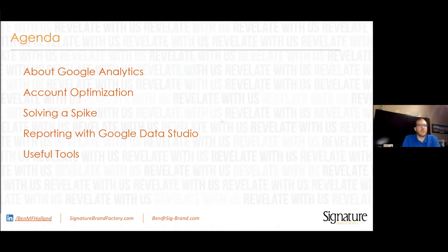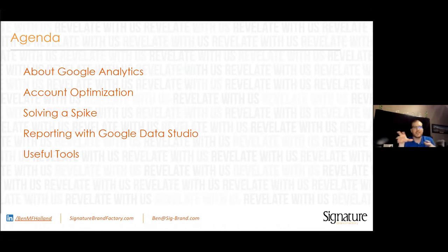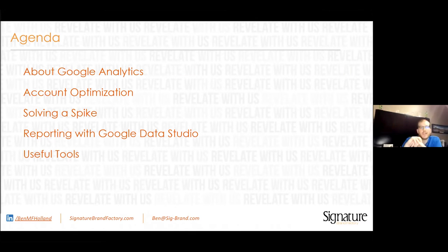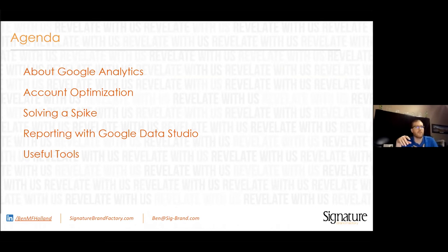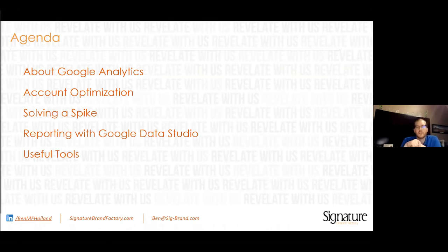Let's get into the agenda. First, we're going to talk about Google Analytics — what it is, get you up to speed, talk about the front end. Then we'll talk about account optimization — everything you need to do on the back end to get clean data. We'll solve a spike, which is a pretty common problem in analytics. Then I'll talk briefly about reporting with Data Studio, and at the end, a lightning round of useful tools you might not know about.